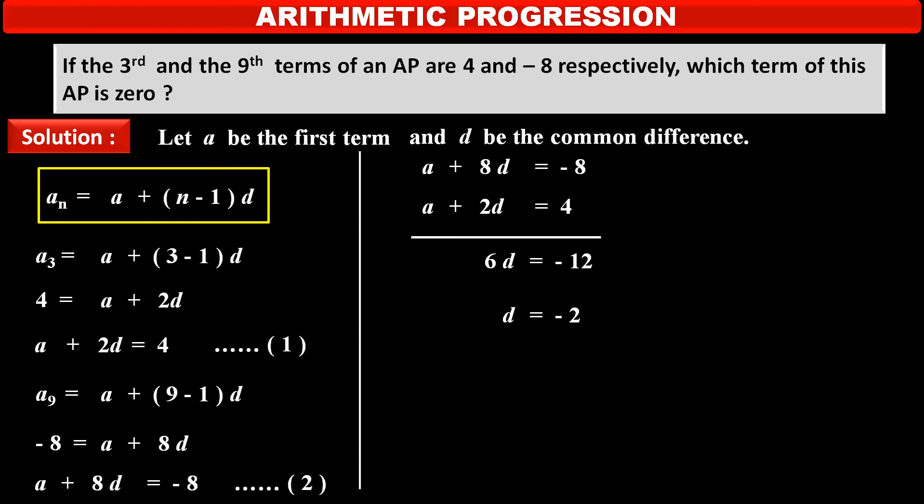Dividing both the sides by 6, we get D is equal to minus 2. Substituting this value in equation number 1, we get A plus 2 into value of D that is minus 2 is equal to 4. Thus, solving this, we get A is equal to 8.